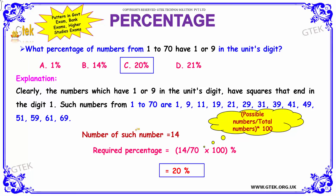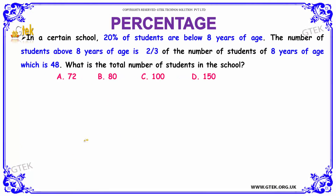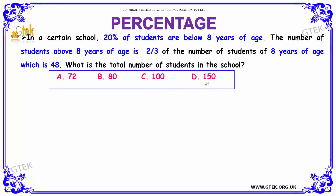20% is our answer. We have our next example where 20% of the students of a school are below 8 years of age, and the number of students above 8 years of age is 2/3rd of the number of students of 8 years of age, which is 48. What will be the total number of students in the school? Options: A. 72, B. 80, C. 100, and D. 150.